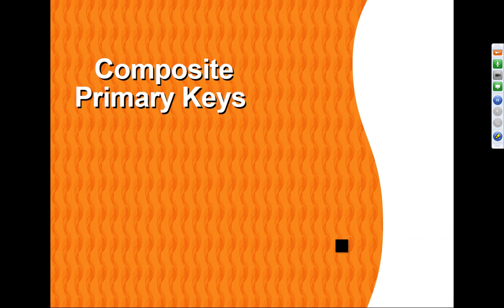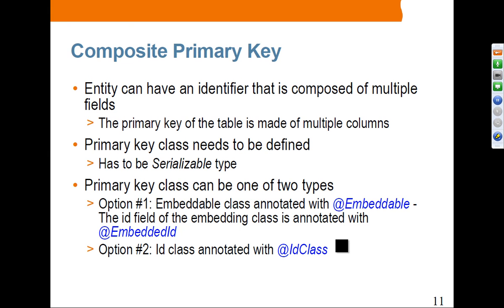The next topic is composite primary keys. We have already had some exposure to this in previous examples. A composite primary key means an entity can have an identifier composed of multiple fields, so the primary key of the table is made of multiple columns. This primary key class needs to be defined and must be serializable. You can create a composite primary key in two different ways: one is using @Embeddable, and the other is using @IdClass.